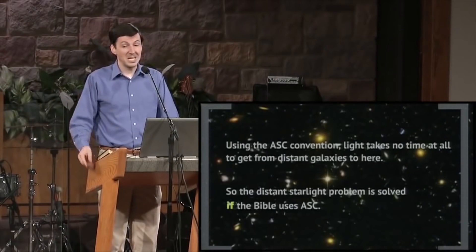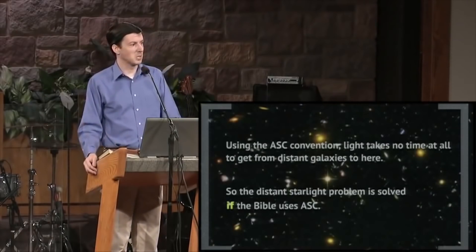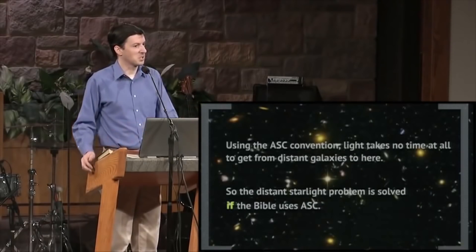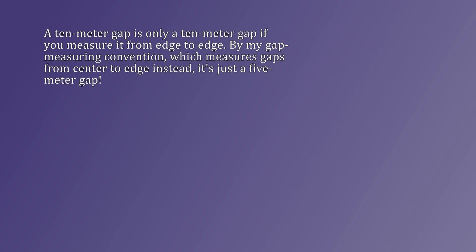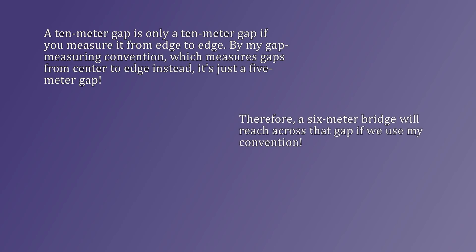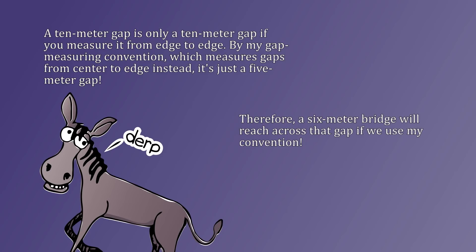Choosing the one-way speed of light is like choosing whether to use metric or imperial units. I can give you plenty of reasons why I think metric is better, but that doesn't mean that using imperial units is wrong — you'll still end up making the same predictions. The problem isn't that Lyle's model is wrong, it's that it's not even a model, it's just a convention, and that's the ultimate reason why it can't solve the problem Lyle claims that it solves. It's like he's trying to cross a 10-meter gap with a 6-meter bridge by choosing a gap-measuring convention whereby you measure a gap not from edge to edge, but from center to edge. Sure, you can use that convention, but no choice of gap-measuring convention will make the bridge reach across the gap.